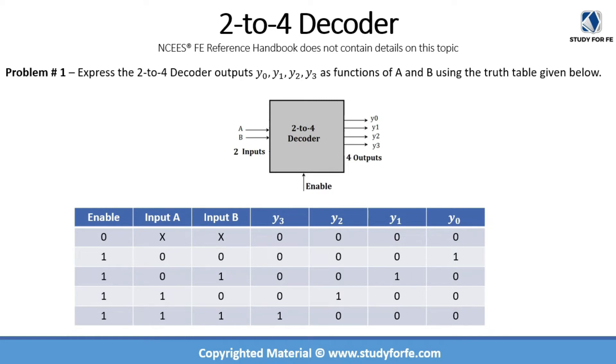Let us now take a look at a practice problem. We are being asked to express the 2 to 4 decoder outputs y0, y1, y2, y3 as functions of the inputs a and b using the truth table that is given to us. So we want to come up with a relationship, an expression, a logical function that would relate these output values back to the input values. So let's start with y0. You can see that the value of y0 is equal to 1 when enable is equal to 1, so we will include this e. And a and b are both 0, so because a and b are 0, we will put a bar and b bar. So y0 can be expressed as e times a bar and b bar.